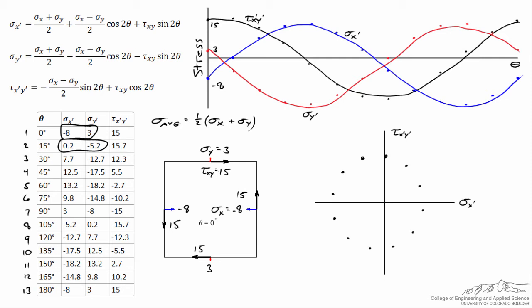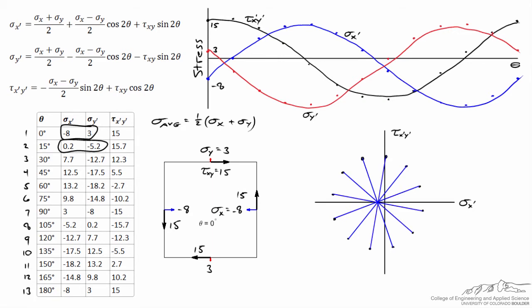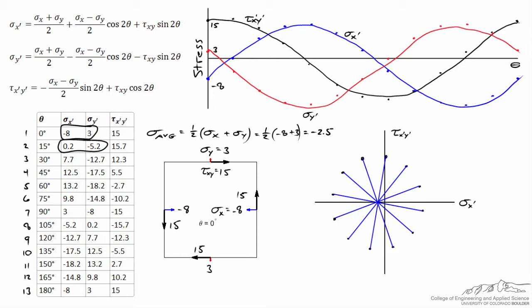Because of this symmetry and because Mohr's circle data points form a circle, I can cut the circle any way I want and find that all data points cross at the same center point, which equals sigma average. We compute sigma average as one half of negative 8 plus 3, giving an average value of negative 2.5. I'll draw a dashed line at sigma average equal to negative 2.5 to the left.